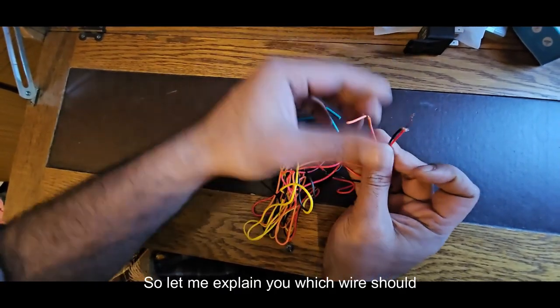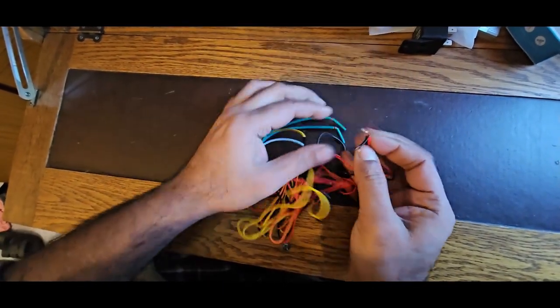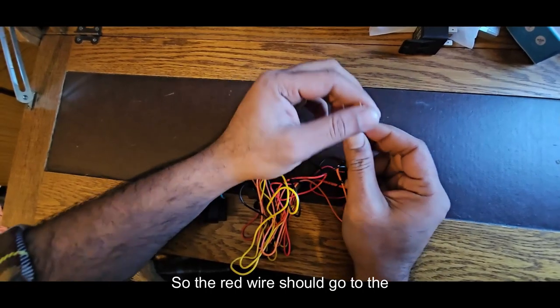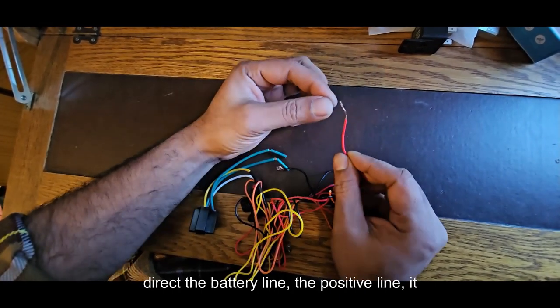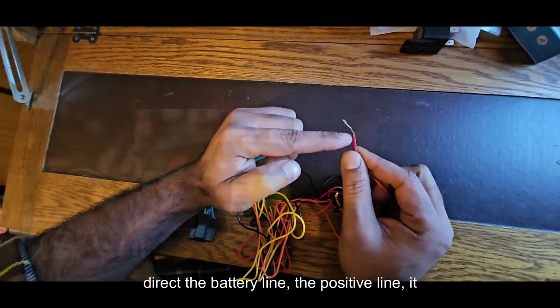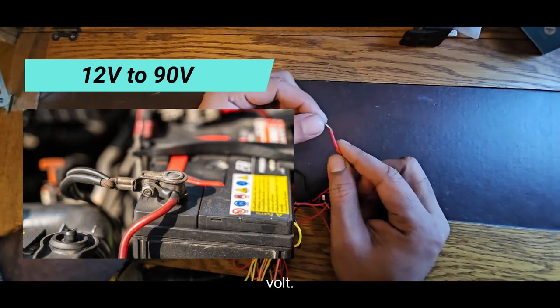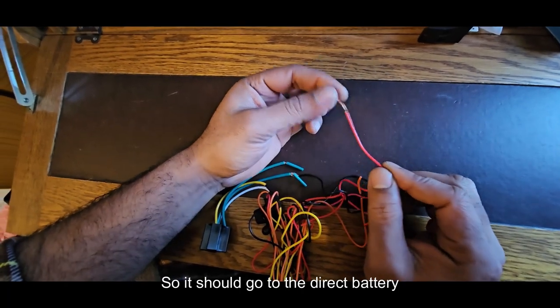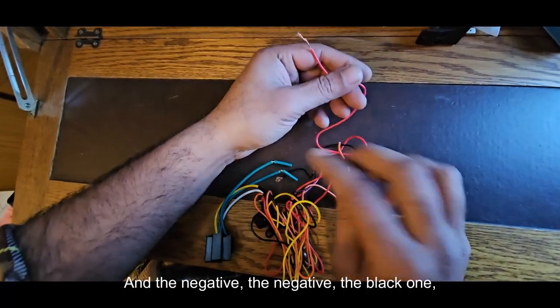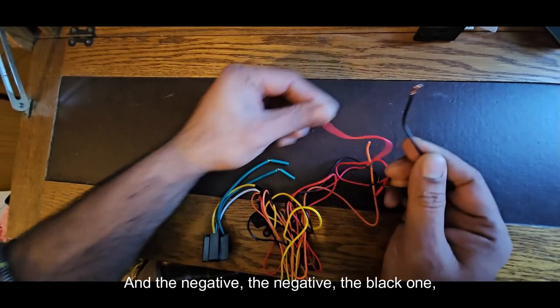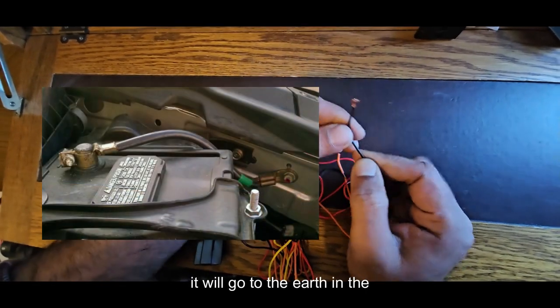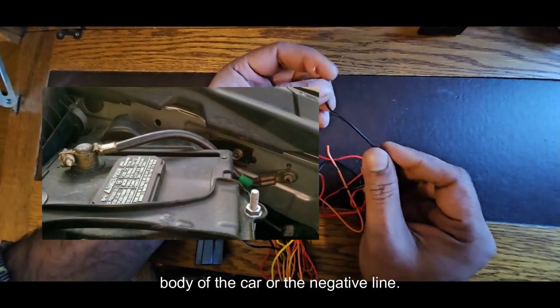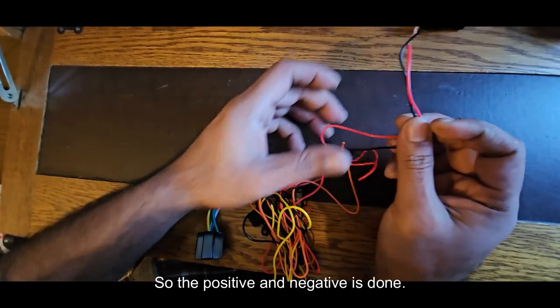Let me explain which wire should connect where. The red wire should go to the direct battery line, the positive line. It can take up to 12 volts to 90 volts. The black one, the negative, will go to the earth in the body of the car or the negative line. So the positive and negative is done.